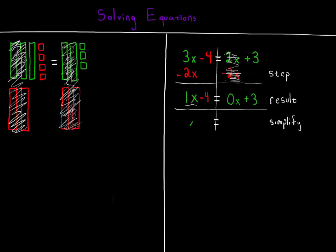1x is written simply as x. We don't need the one in front, it's implied. And 0x isn't anything at all, so we'll abandon it entirely.